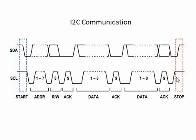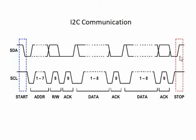Now consider a scenario where the master has initiated a start condition and some data has been sent, but due to some reason the SDA and SCL lines remain high for a longer time. This is not a proper stop condition, because a stop condition must follow a specific sequence: first SCL should be pulled high, and then SDA should be pulled high.